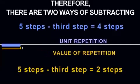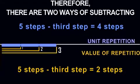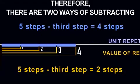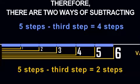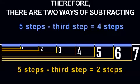On the basis of the previous discussion, there are two distinct ways of subtracting: one involving concatenation and the other nesting. Five steps minus the third step equals four steps represents concatenation. Five steps minus the third step equals two steps represents nesting.